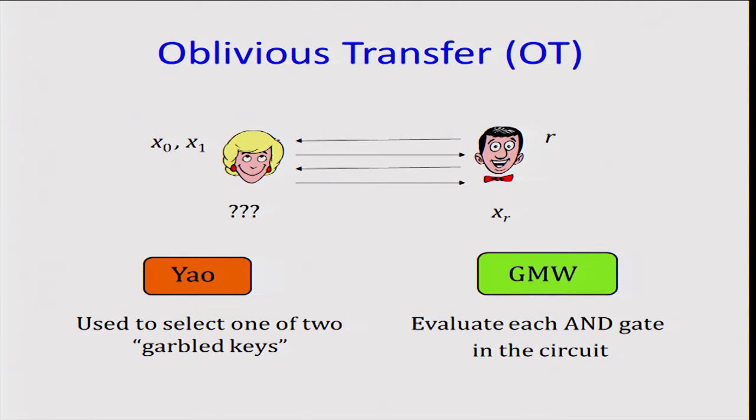OT is a very fundamental building block in SFE. In YAO, it is used to select one out of two garbled keys in an oblivious fashion. In GMW, it's more intensively used, where you evaluate each AND gate in the circuit using an OT protocol.